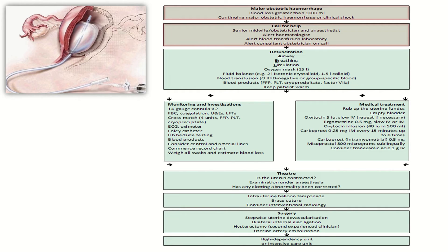After calling for help, immediately start the resuscitation process beginning with ABC: airway management, breathing, and circulation. Attach an oxygen mask and start oxygen at about 15 litres. Manage fluid balance with 2 litres of isotonic crystalloid and 1.5 litres of colloid. Arrange and give O-negative or group-specific blood, and also arrange FFP, platelets, cryoprecipitate, Factor VIIa, and keep the patient warm.